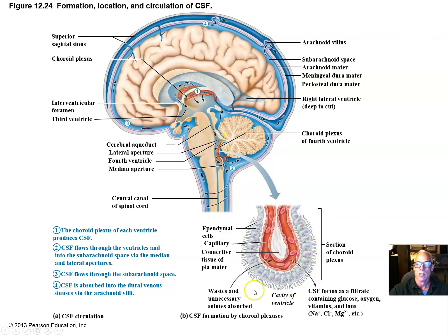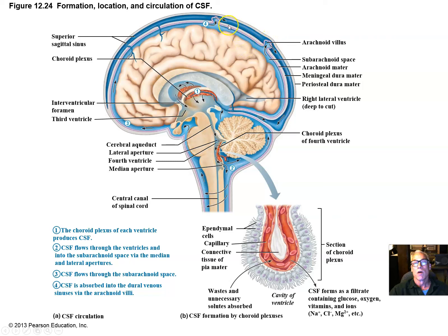The cilia on the ependymal cells provide some motivation for the flow of the fluid. The fluid is produced in the choroid plexus and must be recycled at the same rate it's produced. The arachnoid villi — little bud-like structures formed by the arachnoid layer of the meninges — allow the fluid to return into the venous circulation. This is the superior sagittal sinus, a large vein running along the mid-sagittal plane underneath the cranium, where the cerebrospinal fluid returns to from the circulation around the brain.